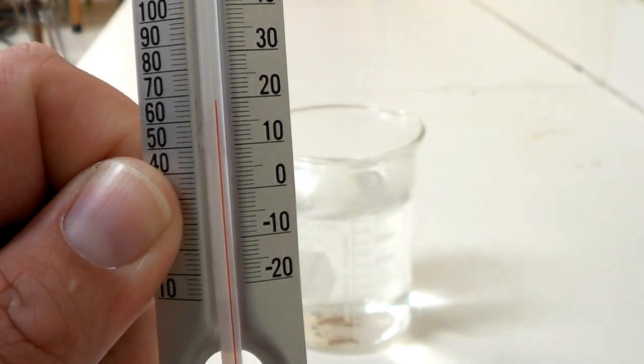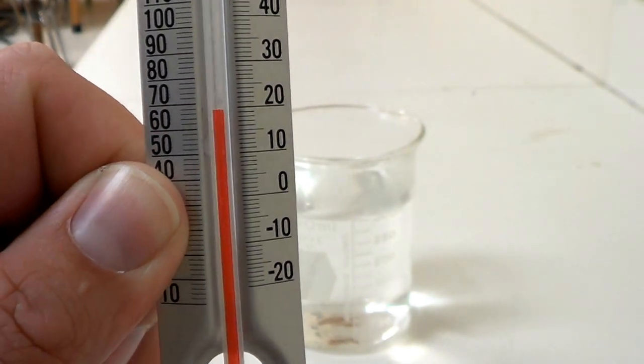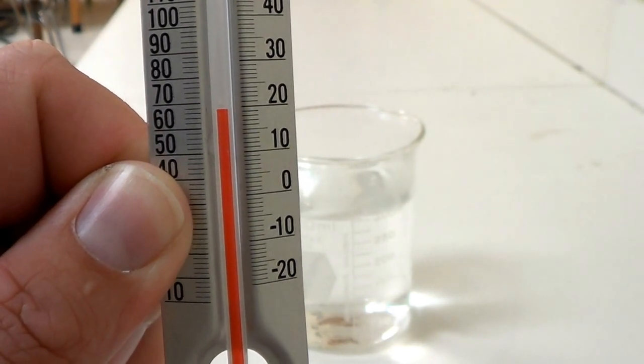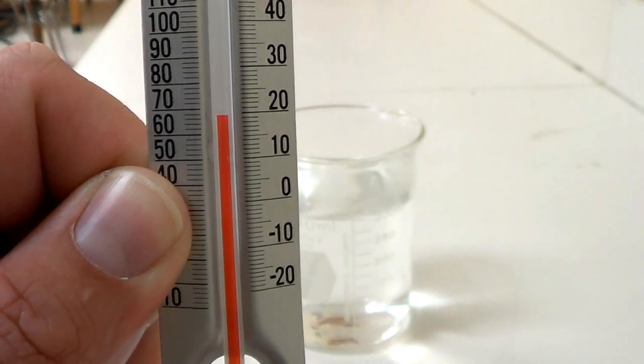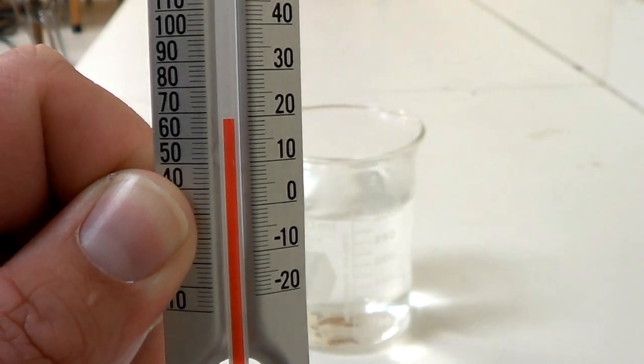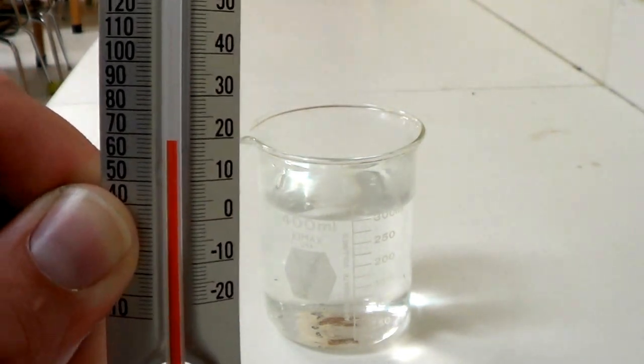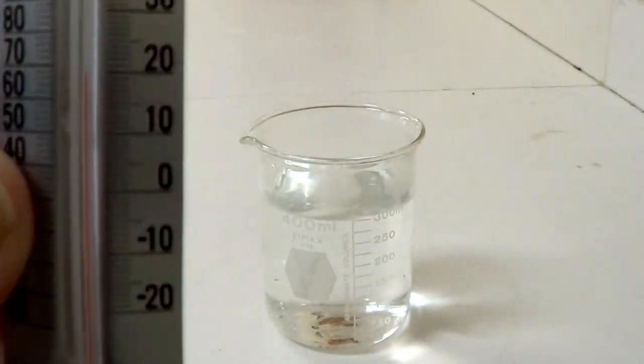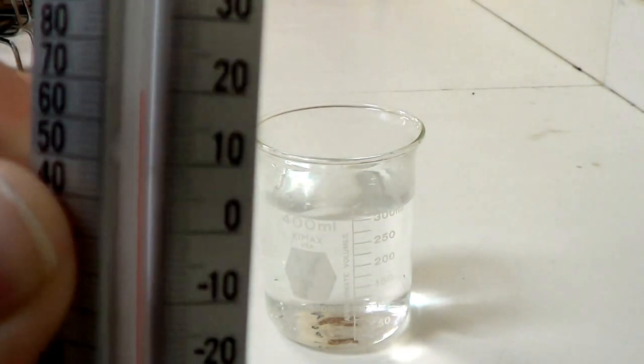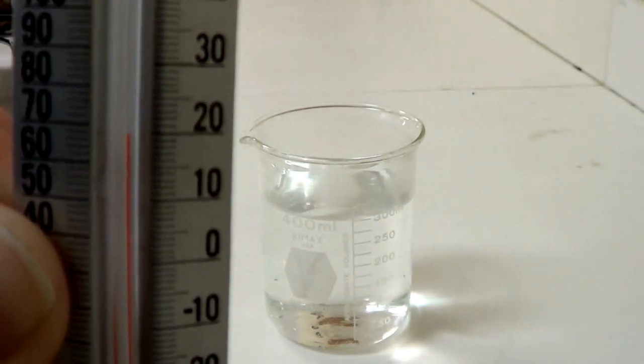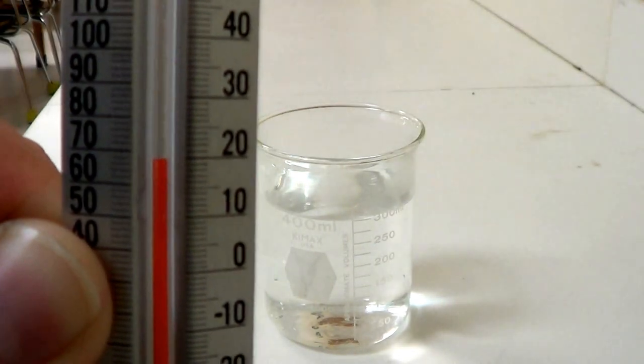Also notice that, and this is particular to this thermometer, if you turn it at an angle, the way the glass is shaped makes the liquid in the tube look much thicker than it actually is as far as width goes, which allows you to make an easier reading on the thermometer. If we just hold it directly on, you can see that that glass tube inside there is very thin.